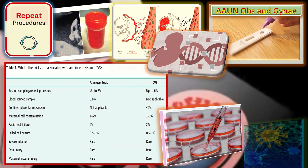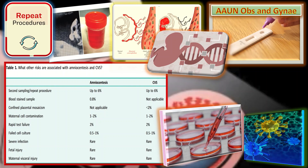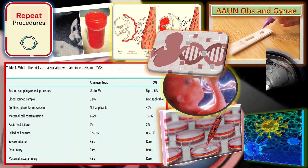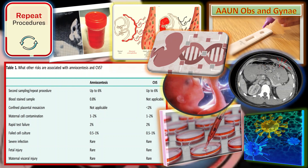Severe infarction is rare with both amniocentesis and chorionic villus sampling, and fetal injury and maternal visceral injury are also both rare with amniocentesis and chorionic villus sampling.